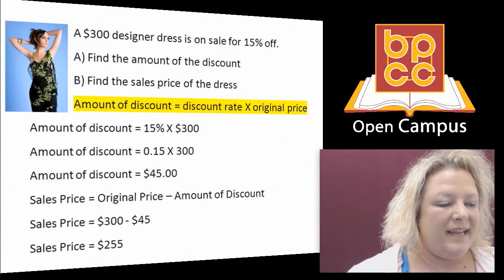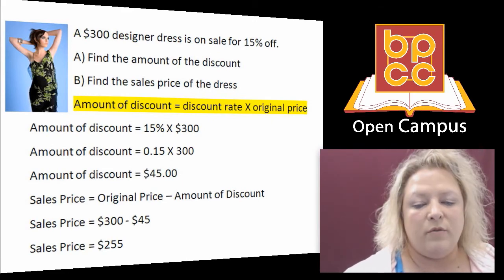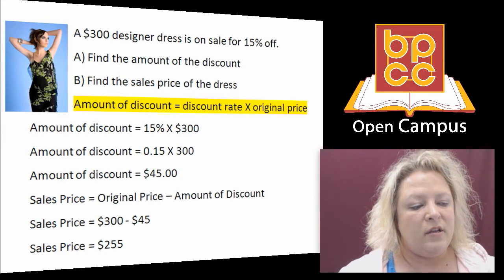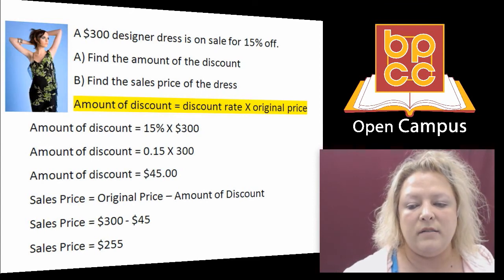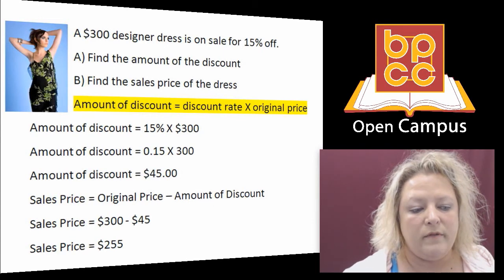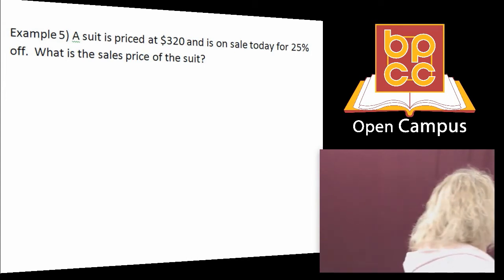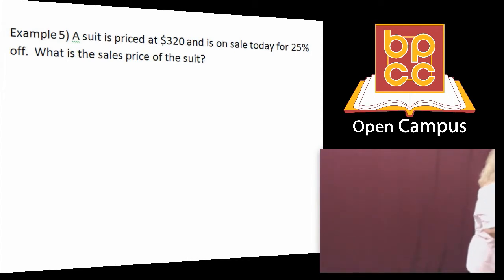Okay, so the next kind of problem we're going to talk about is discount with sale price because everybody knows that's what we're all looking for, right? It's a discount and then the sale price. What am I going to have to pay? So we have a suit. It's priced at $320. So we have the original price is $320. And it says it's on sale for 25% off. So sale discount is 20% off. So I want to know two things. One, I want to know how much is the discount. And two, I want to know what is the sale price.